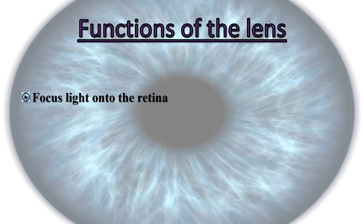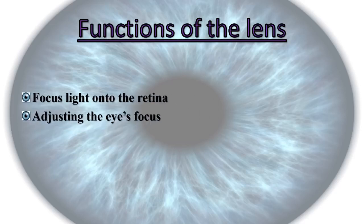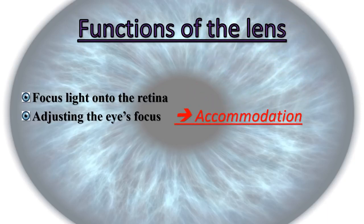The lens has two important tasks. First, just as the cornea, the lens focuses light onto the retina. At the retina, light is changed into nerve signals that are sent to the brain. Second, the lens adjusts the eye's focus, allowing us to see things clearly both up close and far away.